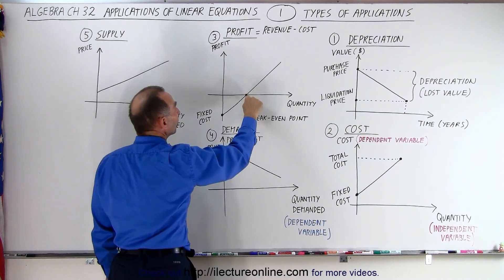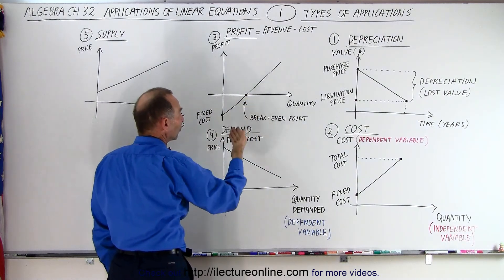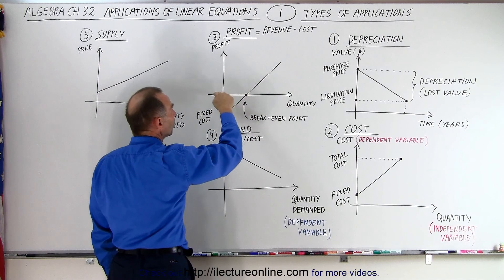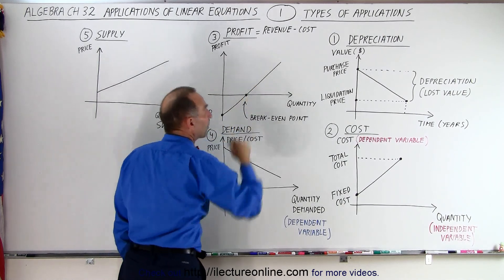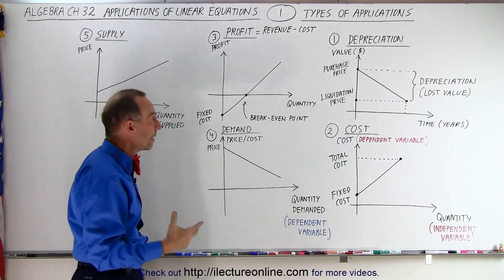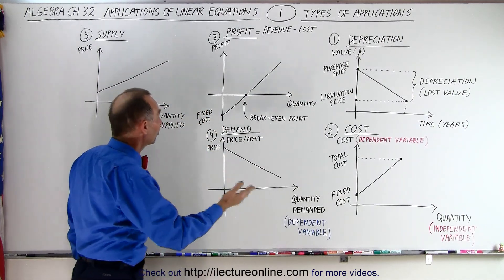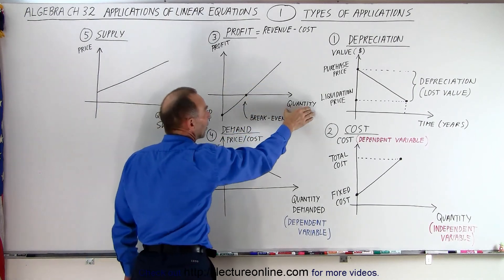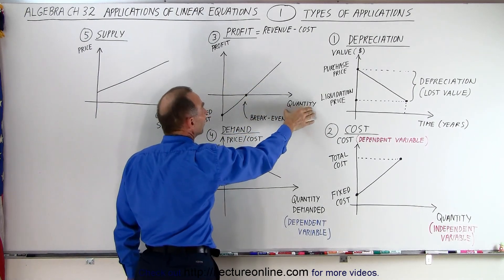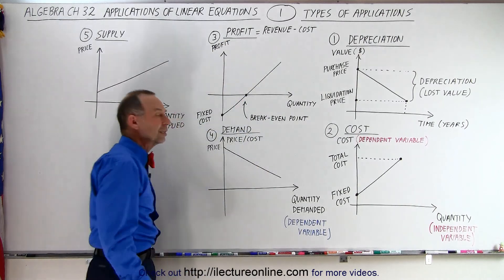And eventually, the total amount of money that it costs to produce the hamburgers will break even. You'll make zero profit after a certain amount of hamburgers. But then if you produce more hamburgers and sell more hamburgers, you're beginning to make a profit. So here you can see that's the profit equation. And again, the quantity of hamburgers that you sell is the independent variable, the profit will be your dependent variable.